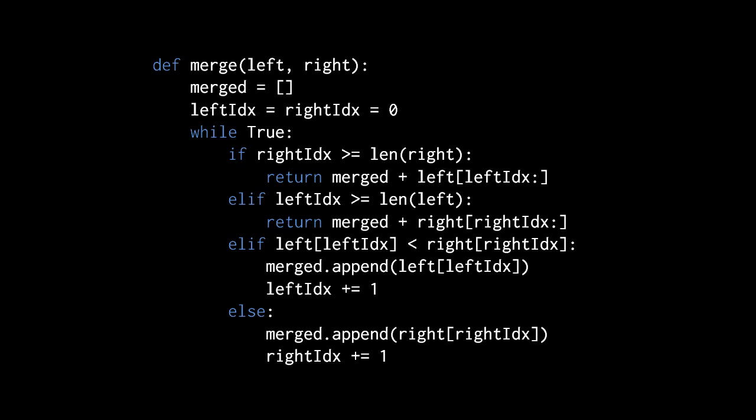Note that the controlling condition of the loop here is simply true, because we want the loop to iterate indefinitely until within the loop we get one of the two cases where either list has been exhausted and we return a result. Because one or the other list will get exhausted eventually, this isn't an infinite loop.